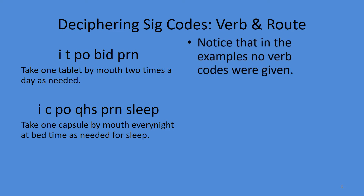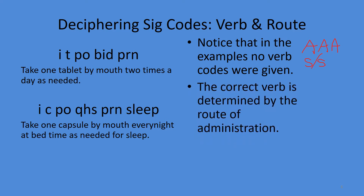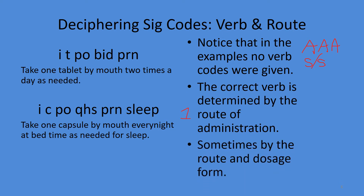No verbs are ever given — though once in a while you might get 'aaa,' which means apply to the affected area, or 's/s,' which means swish and swallow or swish and spit out. If a verb is not given, you first look at the route of administration, and secondarily the dosage form.